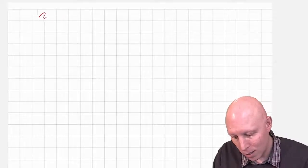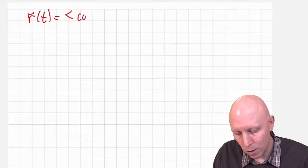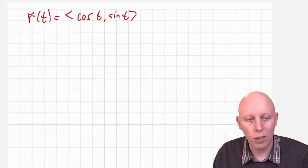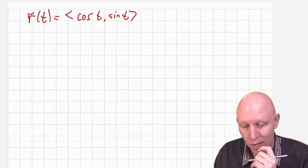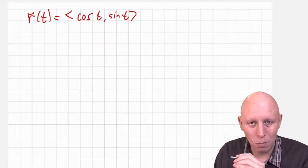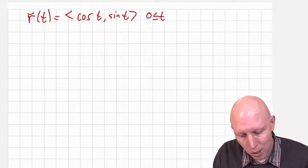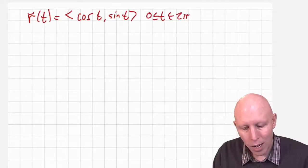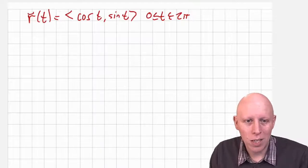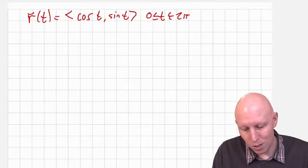Let's talk about r of t is equal to cosine of t, sine of t. This is a great example. We could go directly to the computer and plug it in, or plug in some points. I'm going to give us a domain of t between zero and two pi, and make us think a little bit about trig before we draw this picture.